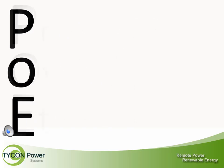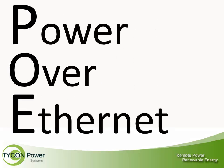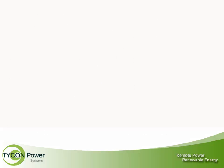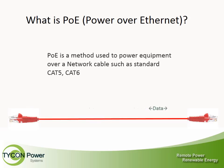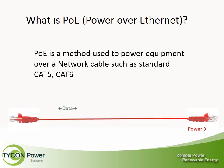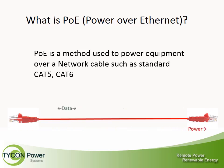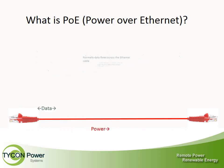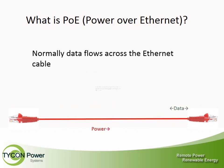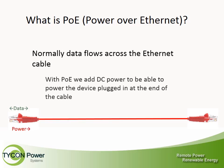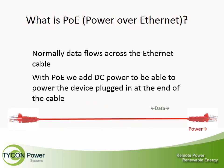PoE, or Power over Ethernet, is a method used to power equipment over a network cable such as a standard CAT5 or CAT6. Normally data flows across the Ethernet cable. With PoE, we add DC power to be able to power the device plugged in at the end of the cable.